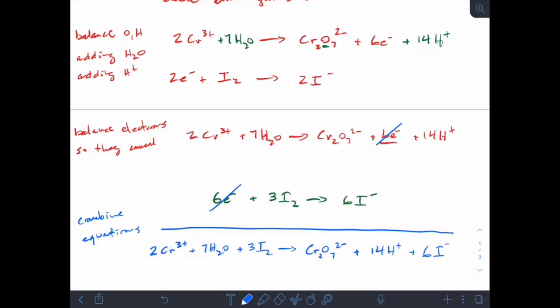So there is our balanced redox equation. And if you go through this carefully, the entire thing should balance perfectly. Two chromiums, two chromiums, 14 hydrogens, 14 hydrogens, 7 oxygens, 7 oxygens, and so forth. So there's part one of this worked example.